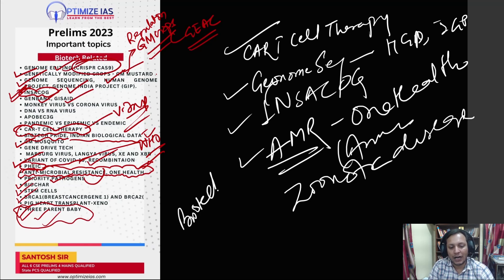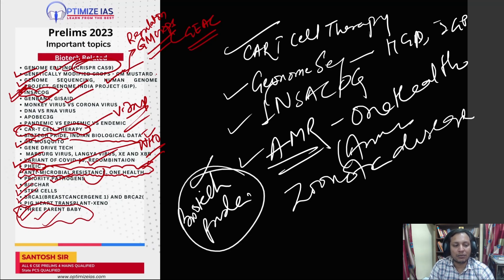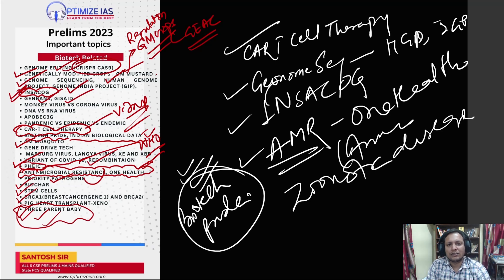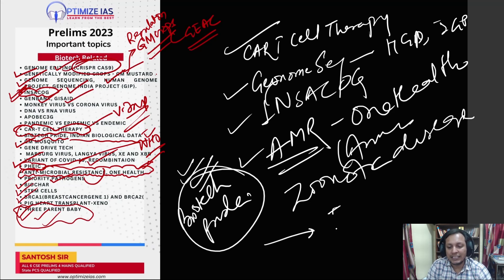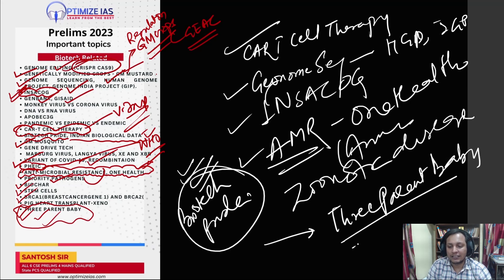Biotech PRIDE is one of the most important topics as far as government of India schemes and initiatives related to biotechnology are concerned. Biotech PRIDE and the India Biological Data Center have a very high chance of coming in the UPSC prelims. Also, there have been new viruses in the news like monkeypox, so they can ask you about the difference between monkeypox and coronavirus, RNA virus versus DNA virus. There has also been recent news related to three-parent baby, which is about mitochondrial transfer therapy — this is very very important.